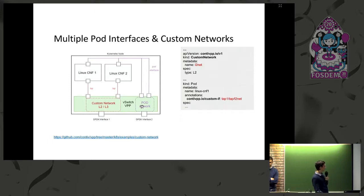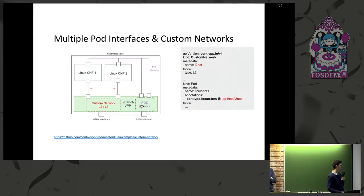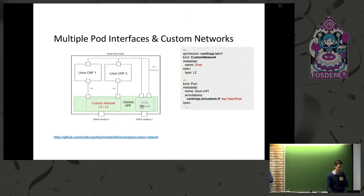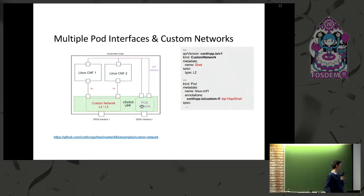For CNF deployments in Conti VPP, if two CNF pods need to talk at L2 level, they can have a first network interface connected to the default pod network and additional interfaces connected to additional networks. You define this using the Conti VPP custom interface annotation, where you specify the interface name in the pod, the type of interface, and the network to connect it to. Supported interface types include TAP (between VPP and the pod), VETH, and MEMIF.